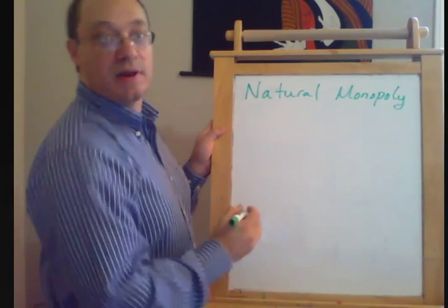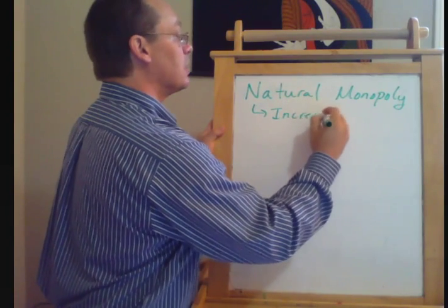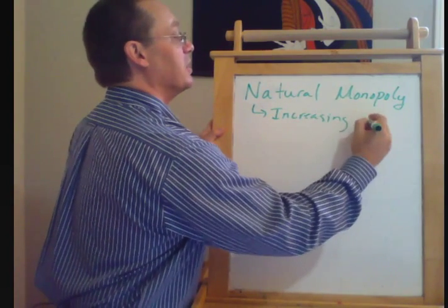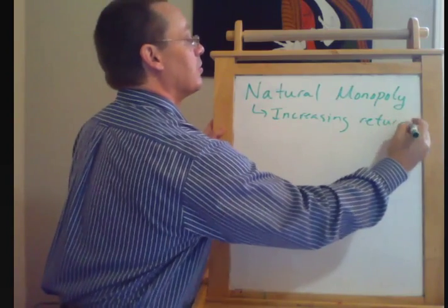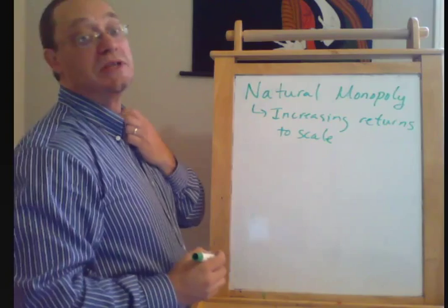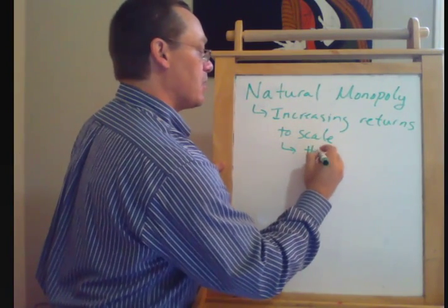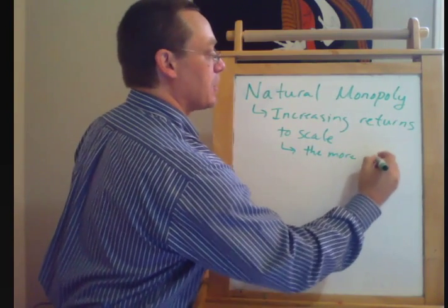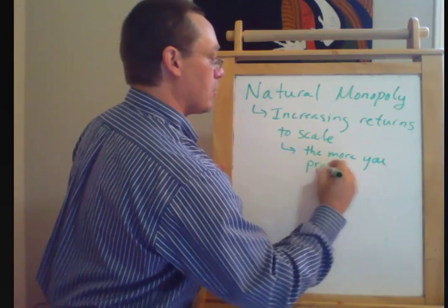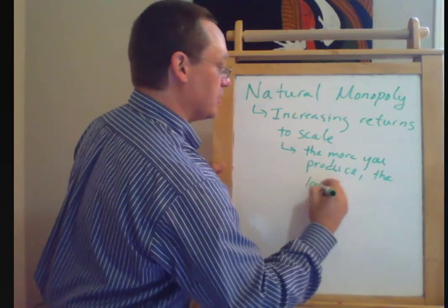So natural monopoly refers to a situation where there are what we call increasing returns to scale. And increasing returns to scale mean that the more you produce, the lower your average cost.